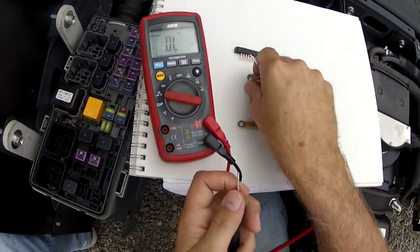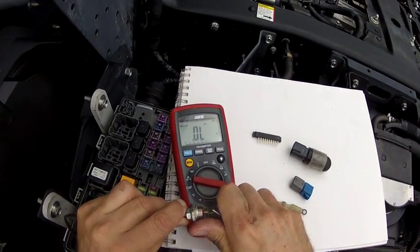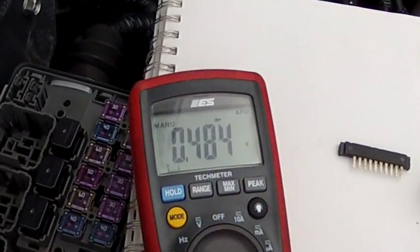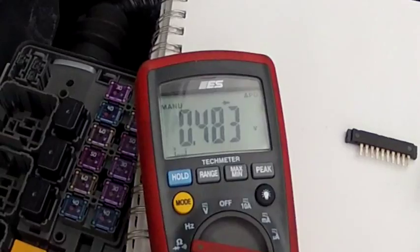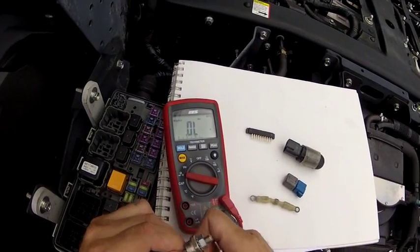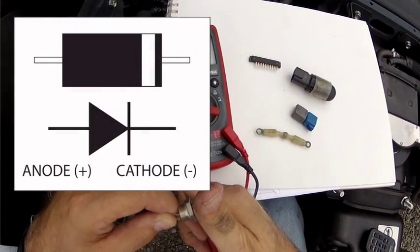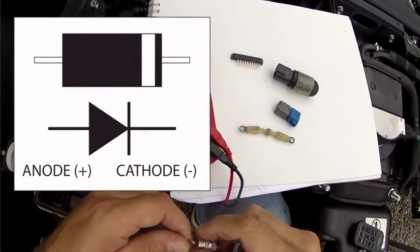This diode, exactly the same thing. You simply measure here, and we get about half a volt, .483. If we flip it over, we get OL. So that tells me that this diode's working fine.